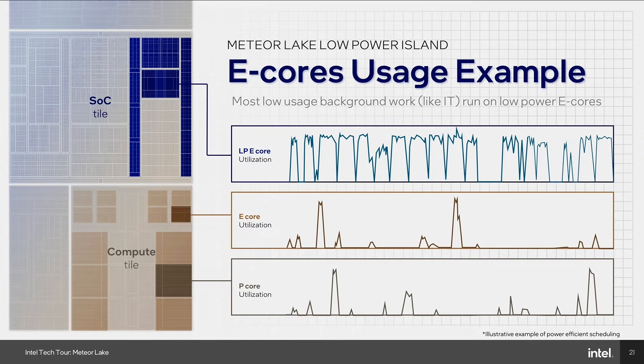This helps us get power benefits. But when we need high demand, high performance work, we have our Compute Complex, we run things on that, and we deliver on performance as well. So we have the low-power island with the cores in the SOC, and then we have the E-Cores and P-Cores on the Compute tile — all three together is what we call the 3D performance architecture.